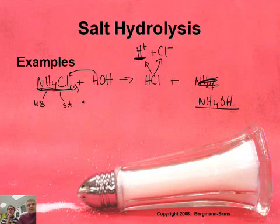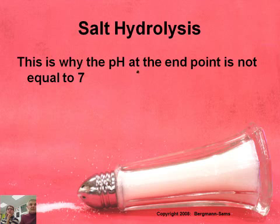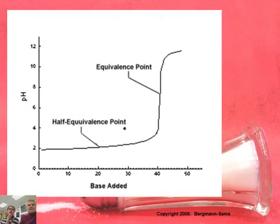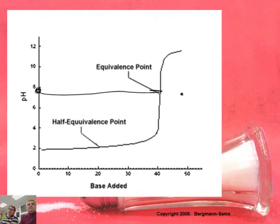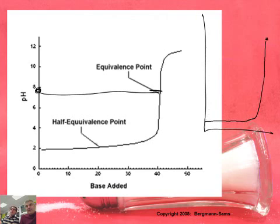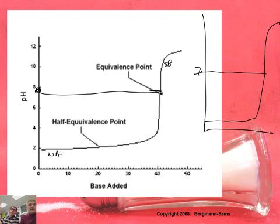So that's how salt hydrolysis works. Why is this important? This is why the pH at the end point is not equal to 7. Remember when we did this graph a little bit ago — the end point here is a little higher, not at 7. Now, if you titrate a strong base with a strong acid, you're going to end at pH 7 because you're going to have water and something like sodium chloride that does not have any acidic or basic properties. But in this graph, we have a weak acid with a strong base, and this pH is greater than 7.